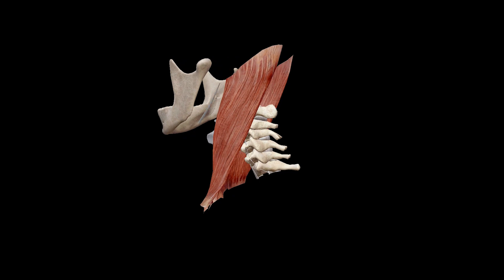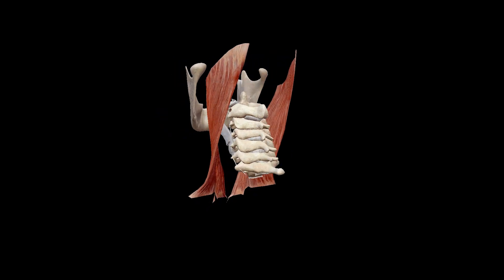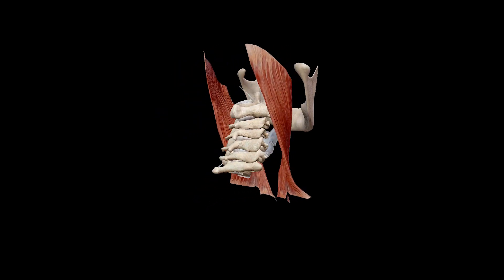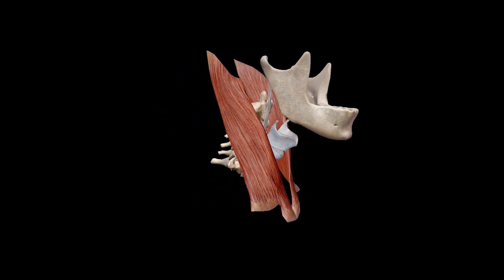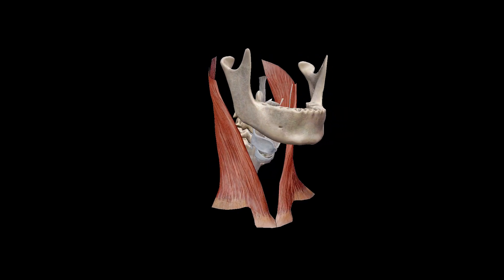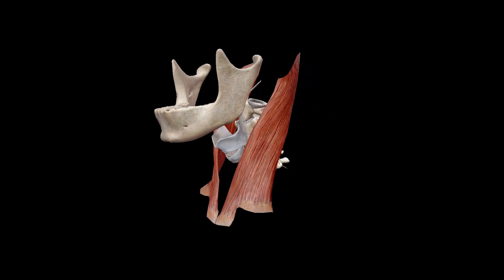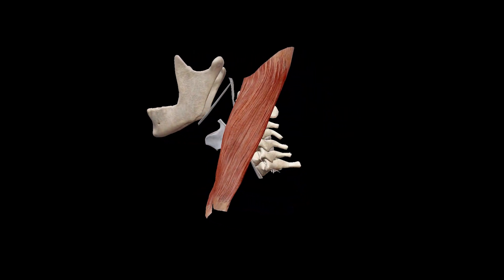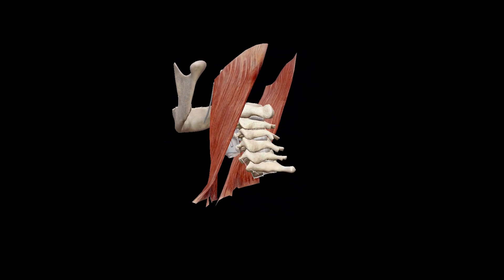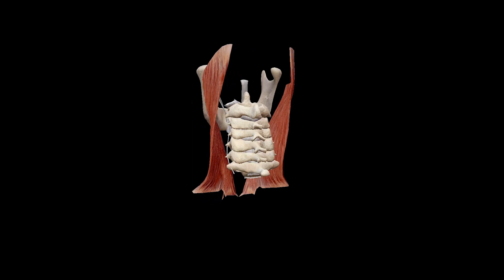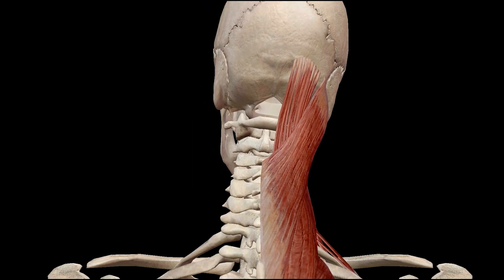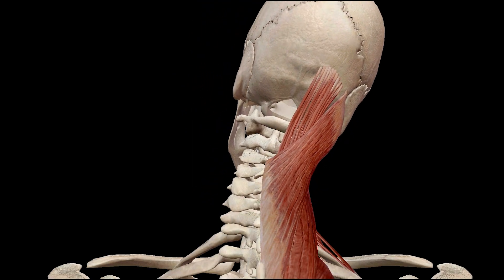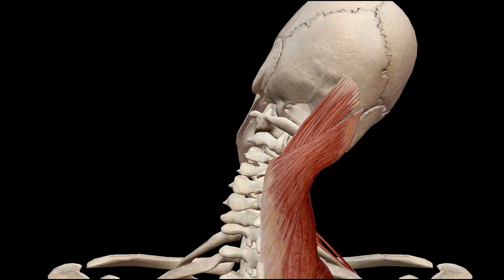Sternocleidomastoid. This muscle is one of the primary muscles involved in lateral flexion of the neck. It is located on each side of the neck and originates from the sternum and clavicle, and inserts into the mastoid process of the temporal bone. When contracted on one side, it tilts the head towards that side.